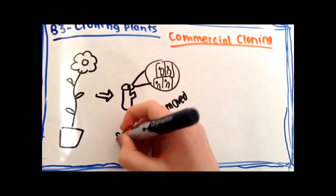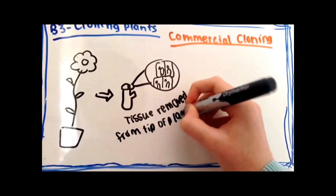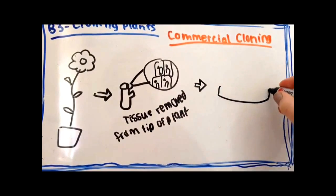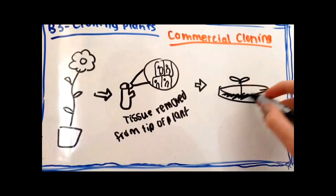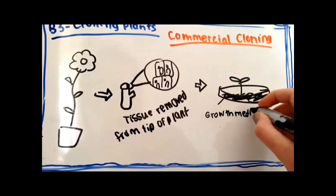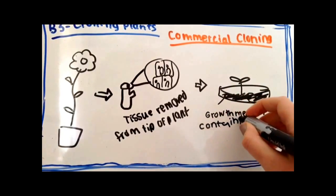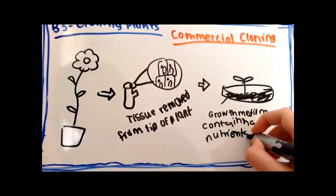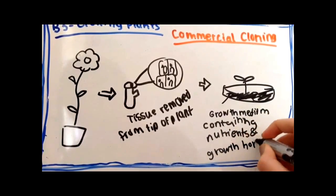You get the best results if you take tissue from fast-growing root and shoot tips. You then grow the tissue in a growth medium containing nutrients and growth hormones. This is done under aseptic conditions to prevent growth of microbes that could harm the plants.